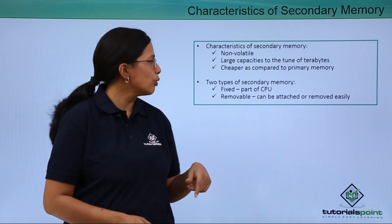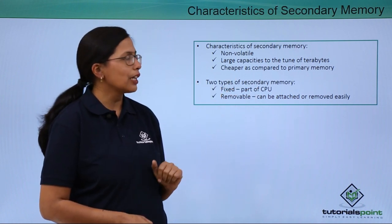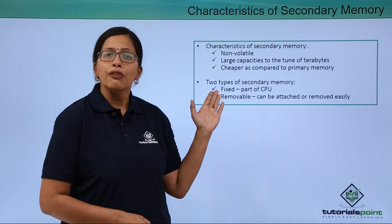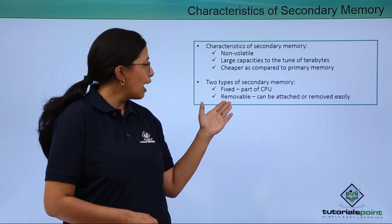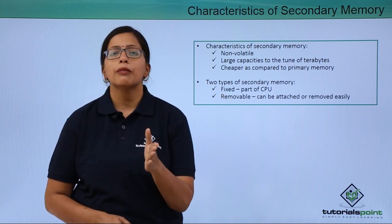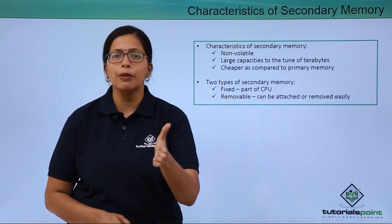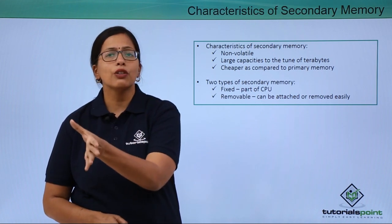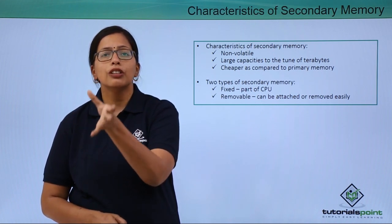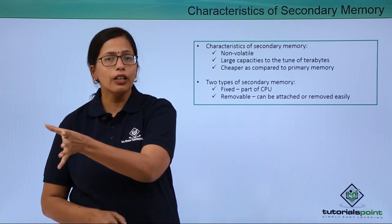Why is it cheaper? Because it is slower. There are two types of secondary memory: fixed and removable. The fixed secondary memory is part of the CPU, the central processing unit, whereas the removable secondary memory can be attached and removed at will.